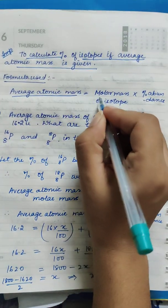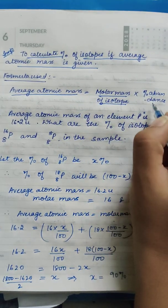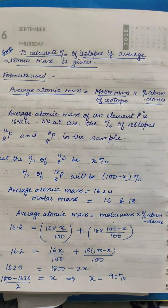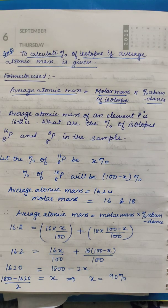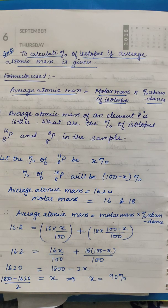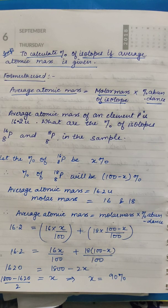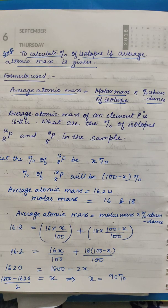The formula says: average atomic mass is equal to molar mass of isotope multiplied by percentage abundance. Now, you will be provided with the average atomic mass and you have to calculate the percentage abundance of each isotope. In the previous video, percentage abundance was given and you calculated average atomic mass. In this video, average atomic mass is given and you calculate percentage abundance.